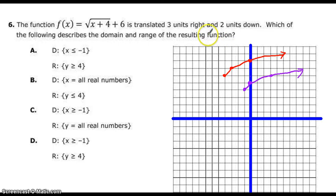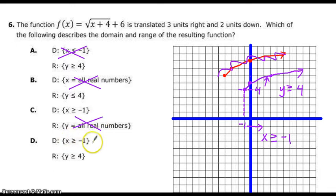Which of the following describes the domain and range of the resulting function? So I no longer really care about this red one. What's the domain and range of this? Domain is x's. So where does it start for the x's? Looks like negative one. Then it goes to the right. Right is greater than or equal to negative one. Range is y values. So what's the y value we start at? One, two, three, four, and it goes up. Up is greater than or equal to four. So find the one that has those two. A has less than or equal to one, so we don't want that one. One, all real numbers, nope. All real numbers, nope. Greater than negative one, greater than four. Looking like answer choice D on that one.